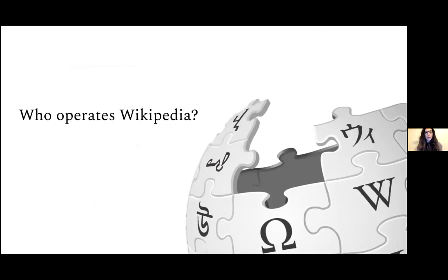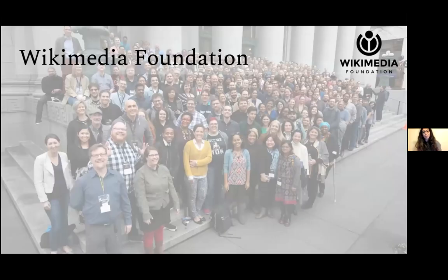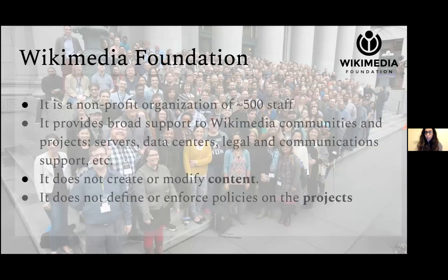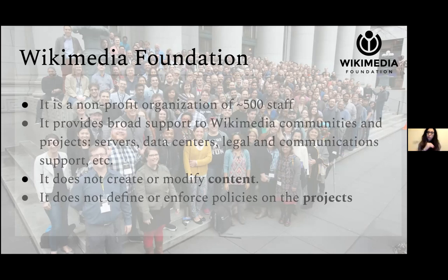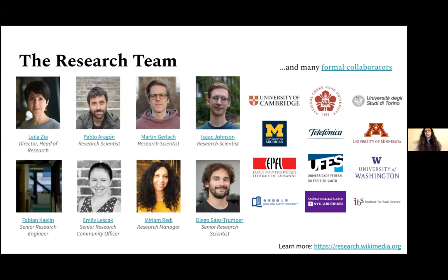So these are pretty big numbers. You might be curious, apart from the hundreds of thousands of people who create the content every day, who operates Wikipedia, who is behind all that. The Wikimedia Foundation is a non-for-profit organization with about 500 employed staff. What we do is that we don't create or modify content — this is entirely done by volunteers — but we provide support to the communities of volunteers that create this content. We provide technical support, legal support, communication support, fundraising, and also innovation support. That is why there exists a research team at the Wikimedia Foundation whose mission is to design technologies and do fundamental research that can support free knowledge communities and help them improve the content on Wikimedia projects.